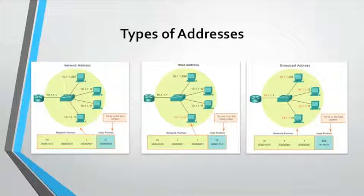When sending network data, the device uses this information to determine whether it can send a packet locally or must send it to a default gateway for remote delivery. When a host sends a packet, it compares the network portion of its own IP address to the network portion of the destination IP address, based on the subnet mask. If the network bits match, both the source and destination hosts are on the same network and the packet can be delivered locally. If they do not match, the sending host forwards the packet to the default gateway to be sent to another network.